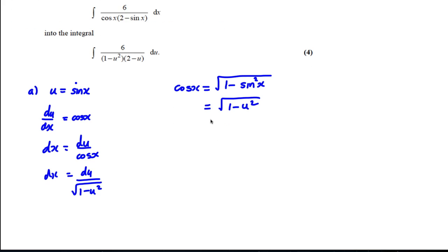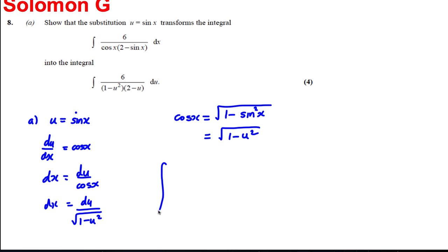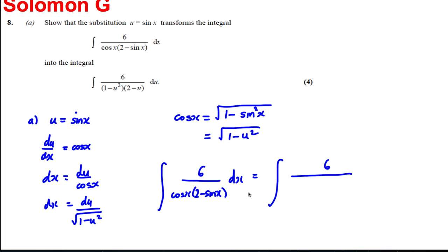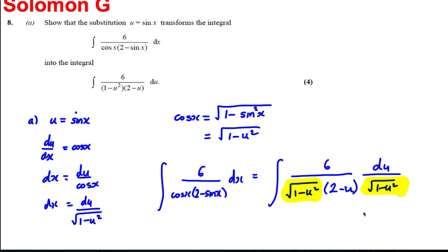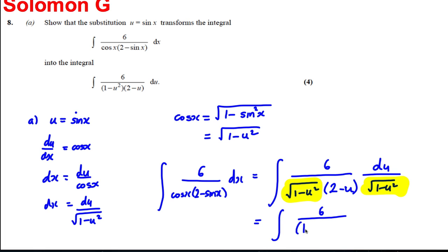The integral of 6 over cos x times (2 minus sin x) dx becomes the integral of 6 over (√(1−u²)) times (2 minus u), with dx replaced by du over √(1−u²). The square root of 1 minus u² multiplied by itself is just 1 minus u², so this simplifies to the integral of 6 over (1 minus u²)(2 minus u) du, just as required. Four marks.